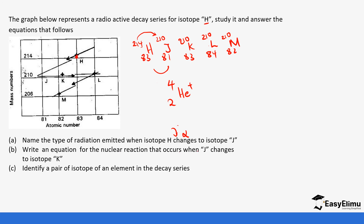Write the equation for the nuclear reaction when J changes to K. There is no change in mass number, so it is not alpha. J starts at mass number 210 and atomic number 81, and K is at mass number 210 and atomic number 83. The atomic number increases by two, which means two beta particles are emitted in this step.